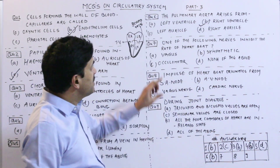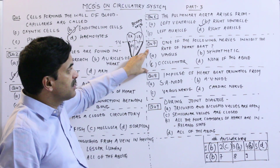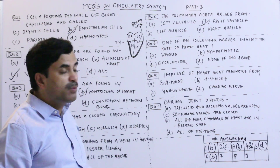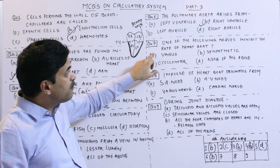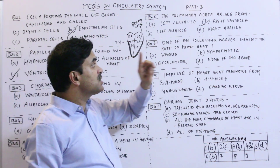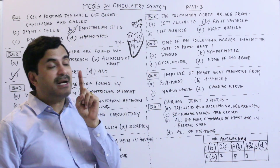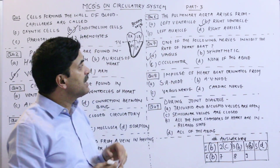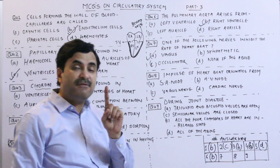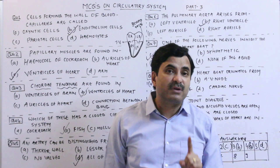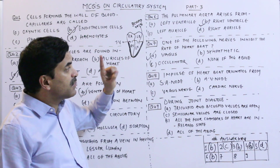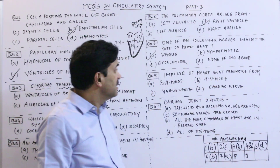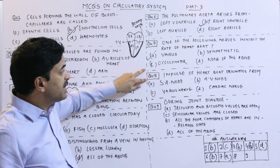Question number seven: one of the following nerves inhibits the rate of heartbeat. The options are vagus nerve, sympathetic nerve, oculomotor nerve, and none of the above. The rate of heartbeat is inhibited by the vagus nerve. If the vagus nerve is bringing signals to the SA node of the heart, then the heartbeat will decrease. So question number seven has the answer A — vagus nerve.